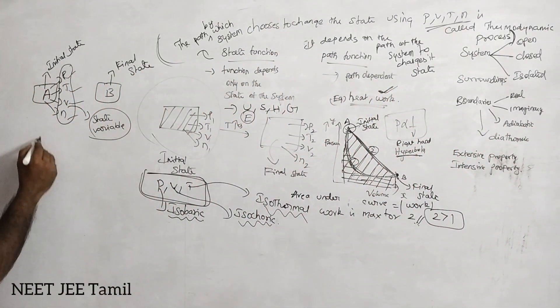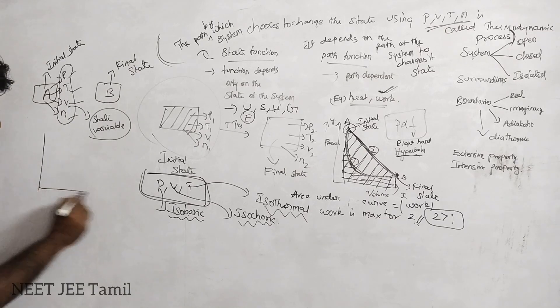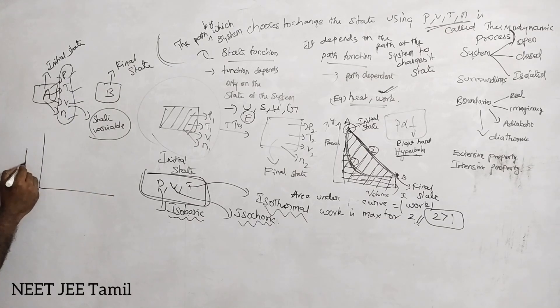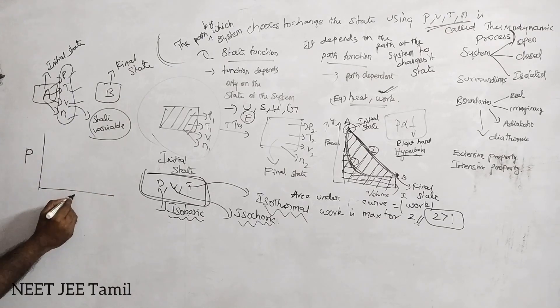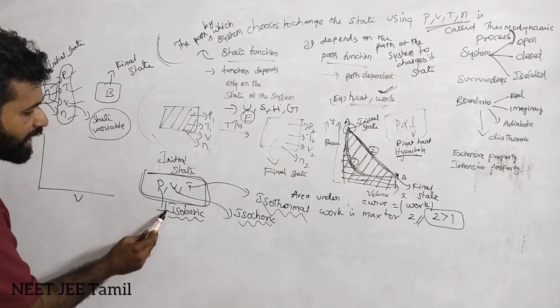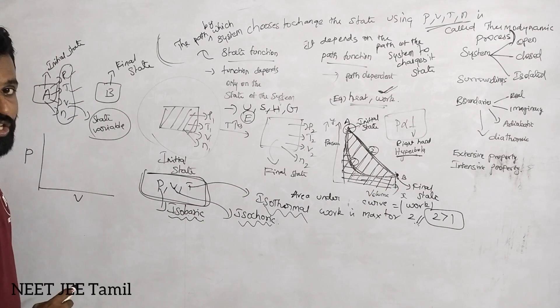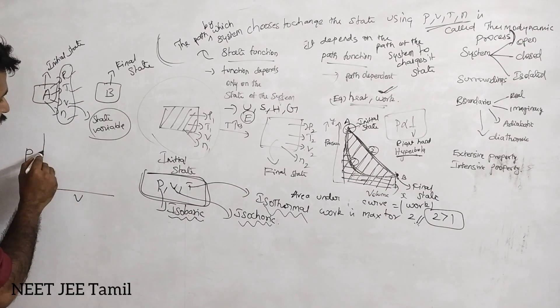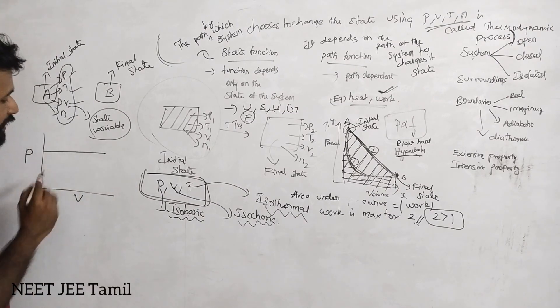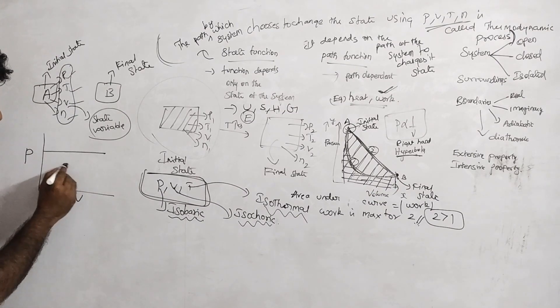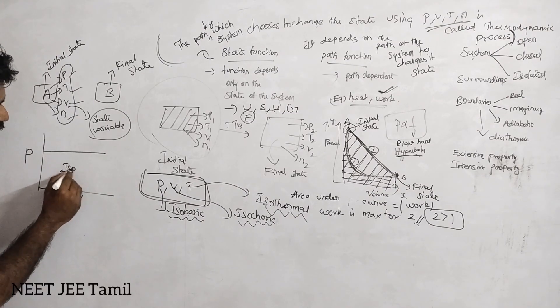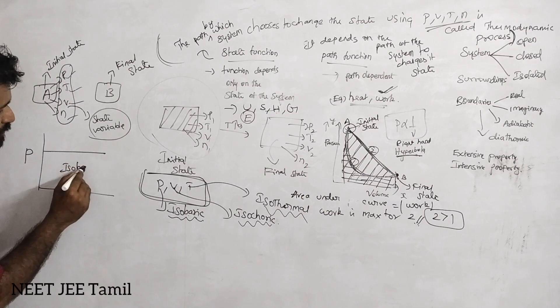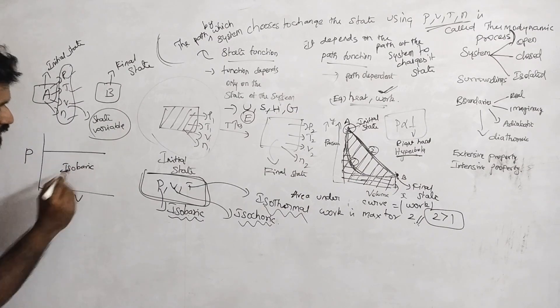Isobaric process. Pressure and volume curve. In the isobaric process, pressure is constant. Now on the graph here — this is the isobaric process.